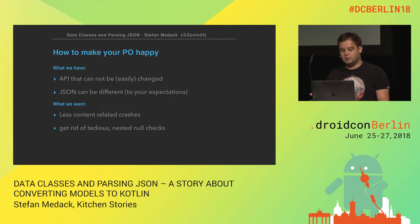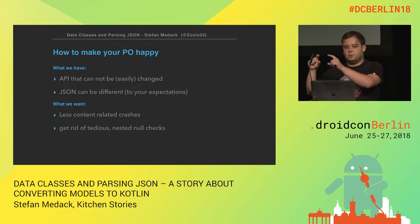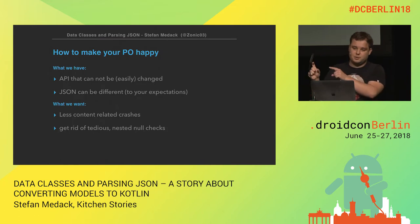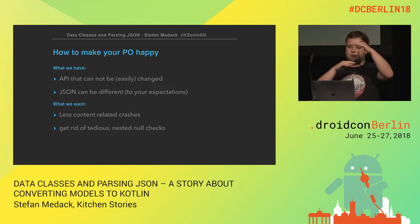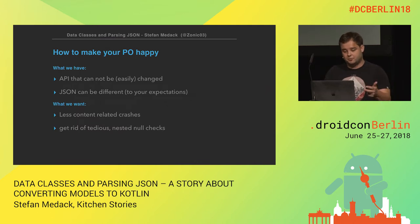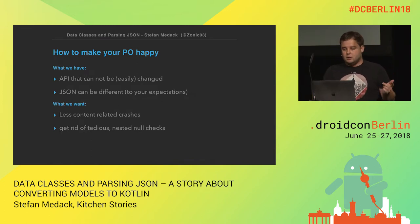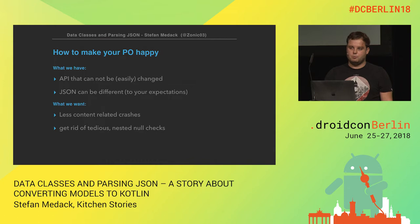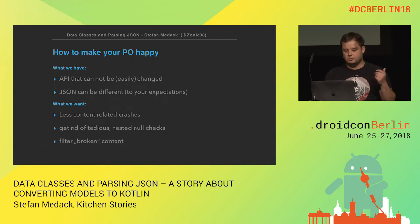At the same time we were trying to get rid of all these tedious null checks — is the recipe null, is the title of the recipe null, is the author null, is the name of the author null — it can be like three lines of if statements just to check if you can read a field without the app crashing. We still had crashes, and every time we fixed the content-related bug there were just a lot. So we tried to solve this at an earlier stage and filter broken content instead of using it within the app.